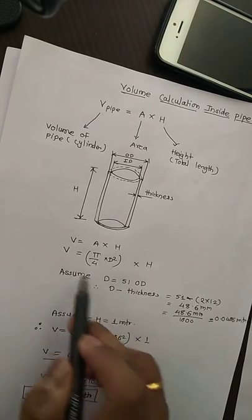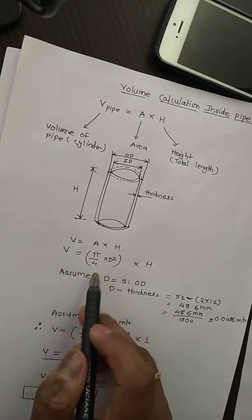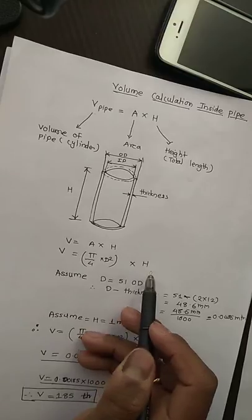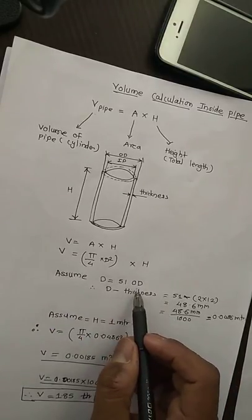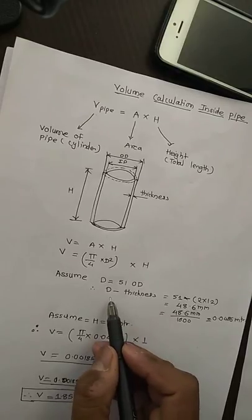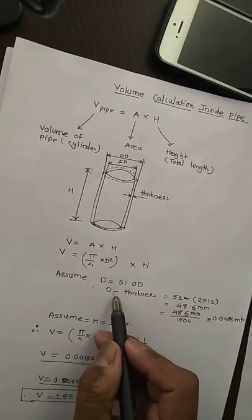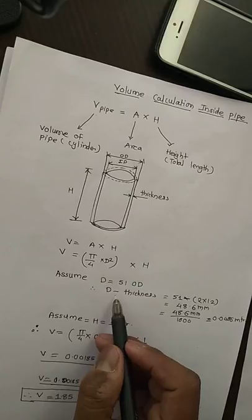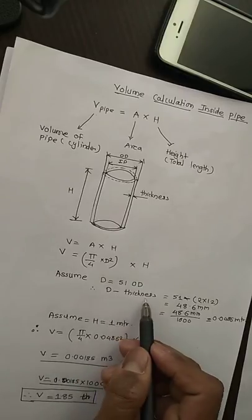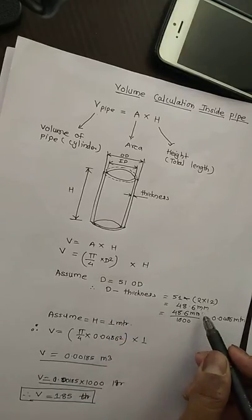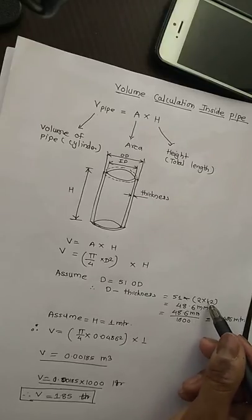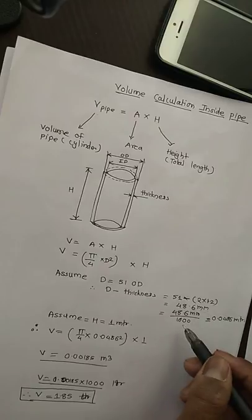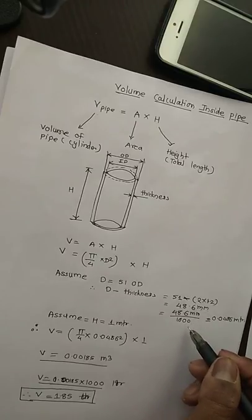V = A × H. Area = (π/4) × D² × H. Let's assume diameter is 51mm OD. Inside diameter we will get: diameter minus thickness. Here is the calculation: 51 minus 2 × 1.2, which is thickness, equals 48.6mm. 48.6mm divided by thousand...